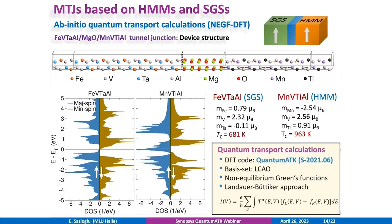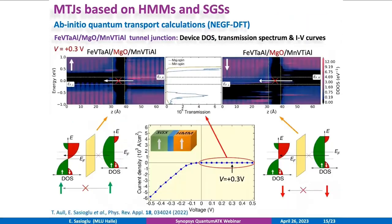The calculated spin-resolved density of states for both materials are shown on the left. For quantum transport calculations, we employed DFT combined with the non-equilibrium Green's function method within the QuantumATK code. The IV curves were calculated using the Landauer-Büttiker formalism. On this slide, we present the calculated IV curve of the magnetic tunnel junction for parallel orientation of the magnetization direction of the electrodes. As can be seen, for a positive bias voltage, the tunnel junction is in the off-state.